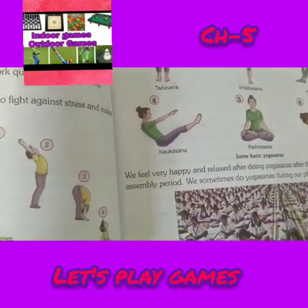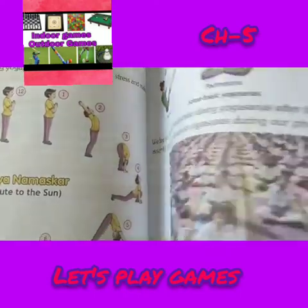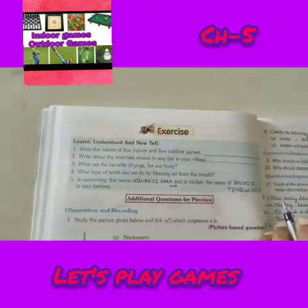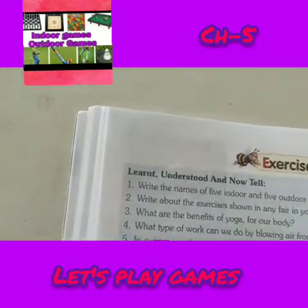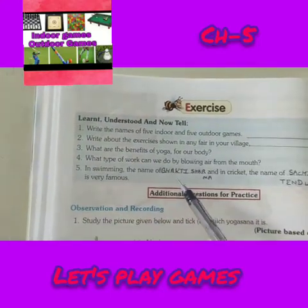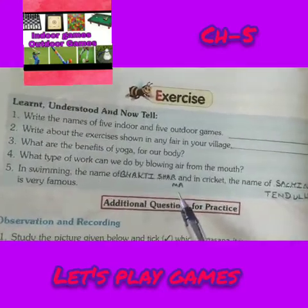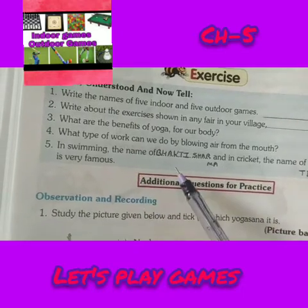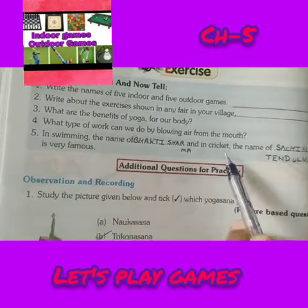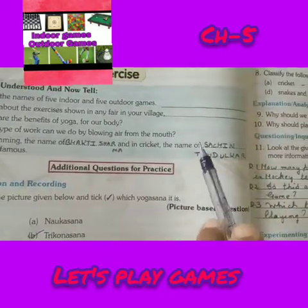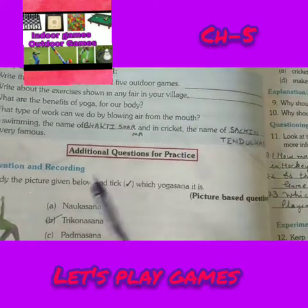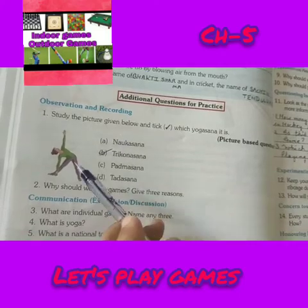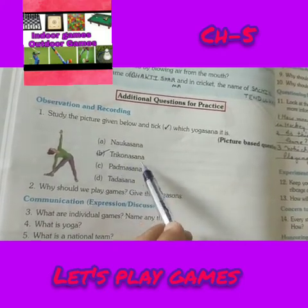Then we go to the next page, page number 52. I hope everyone has opened it. See the last blue box. In swimming, the name is Bhakti Sharma. Who was in swimming? Bhakti Sharma. Then cricket — which name is there? Sachin Tendulkar. Question number 1: which asana is shown in the picture? The answer is Trikonasana.